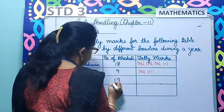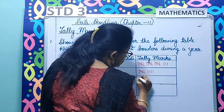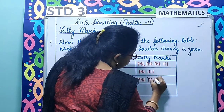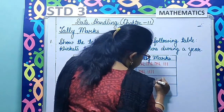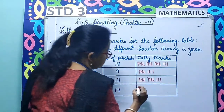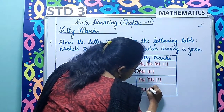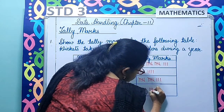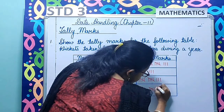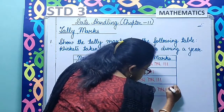Now 13: 1, 2, 3, 4, 5 — group of 5. Then 1, 2, 3, 4, 5 — group of 5. So 5 plus 5 makes it 10, then 11, 12, 13. Now Zahir Khan with 17 wickets: 1, 2, 3, 4, 5 — group of 5. Then 1, 2, 3, 4, 5. Then 1, 2, 3, 4, 5. So 5 plus 5 is 10, plus 5 is 15, then 16, 17.